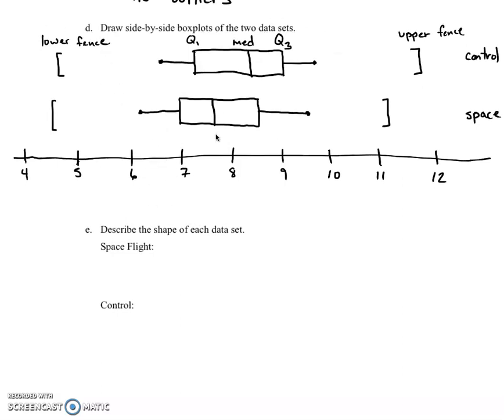Let's describe the shape of these. I don't have the best drawings, but I would say that spaceflight is definitely skewed to the right, and that's because the distance from the median to Q3...